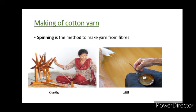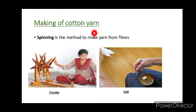Students, next we are going to know about making of cotton yarns. How cotton yarns are made. Spinning is the method to make yarn from fibers. It involves drawing out fibers from the bundles of cotton and twisting them to make yarn.